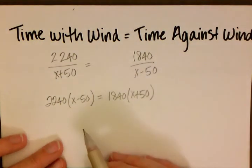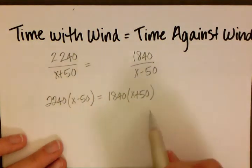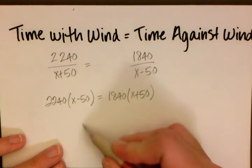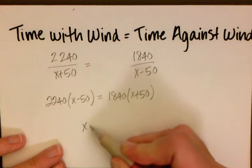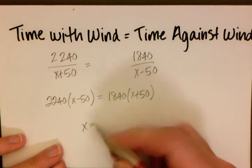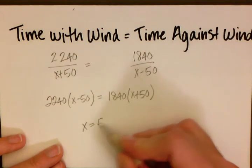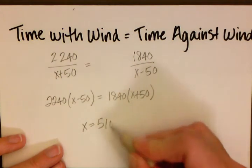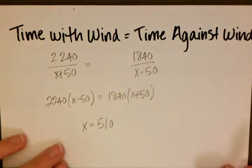Because this is an equation with an equal sign in the middle, we are allowed to cross multiply. So that gives us 2,240 times x minus 50 equals 1,840 times x plus 50. When we distribute and solve for x, we get 510.